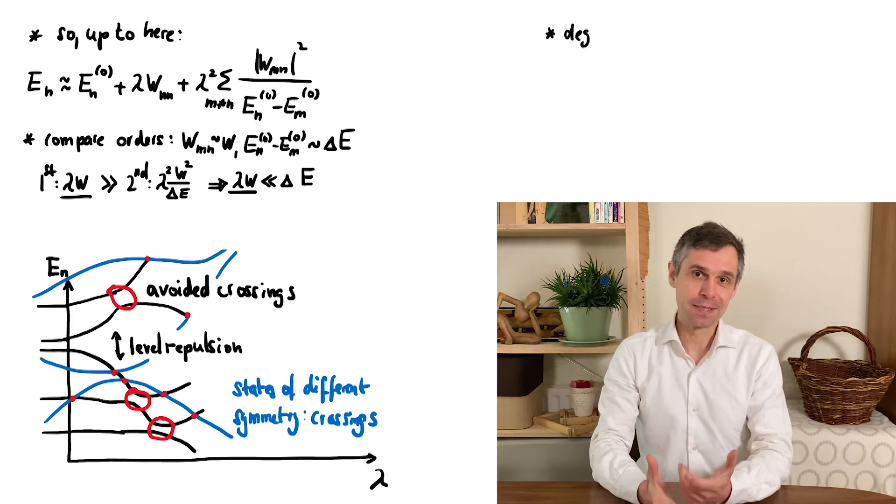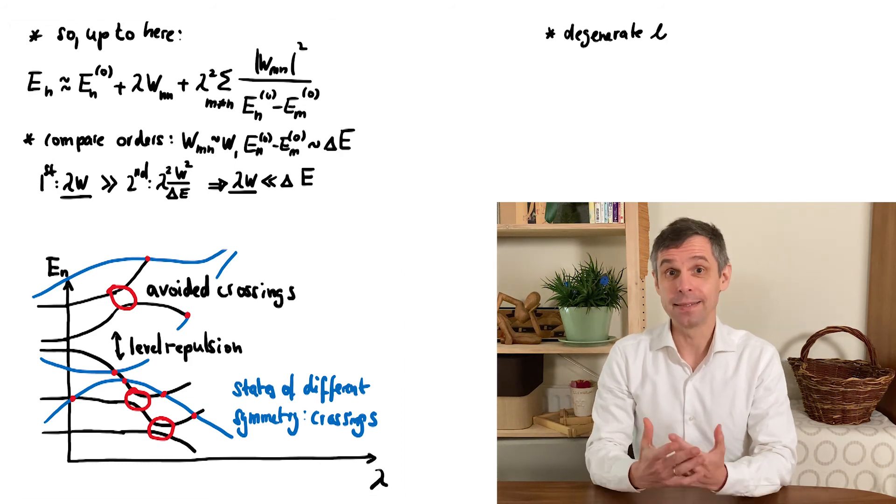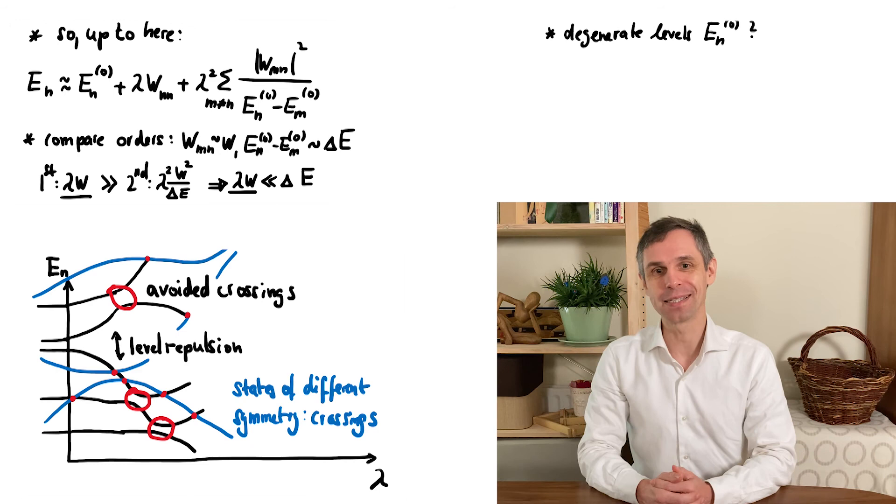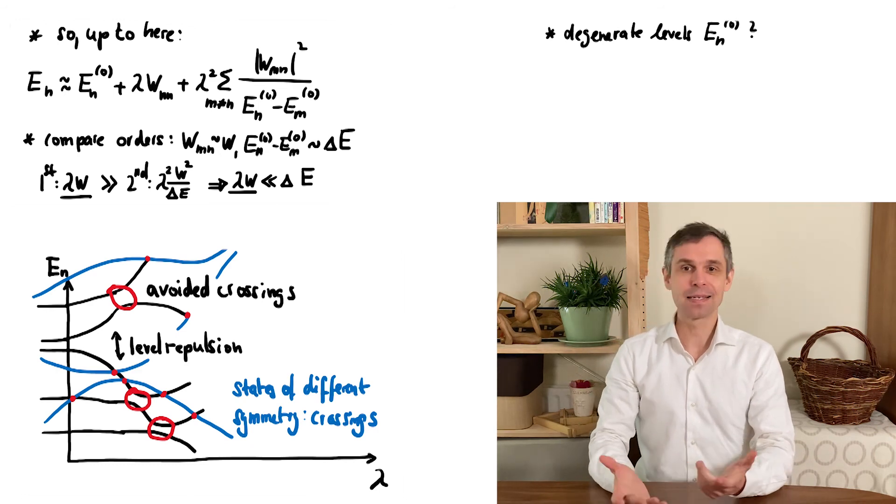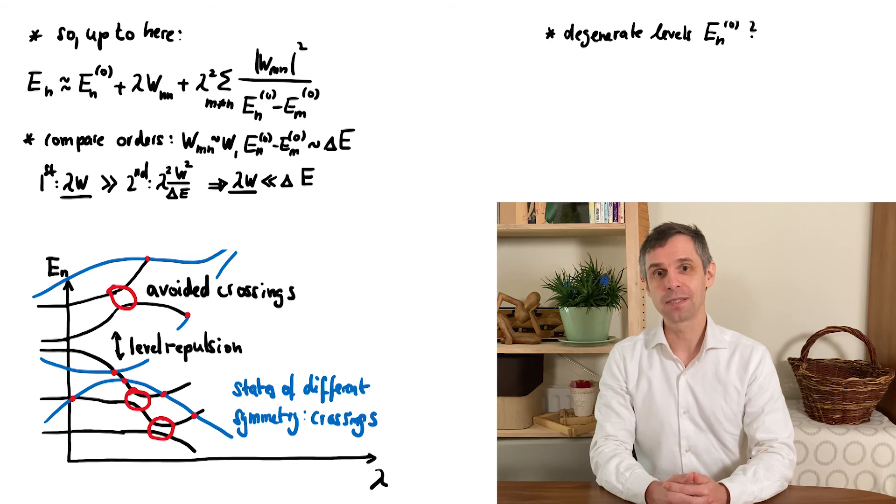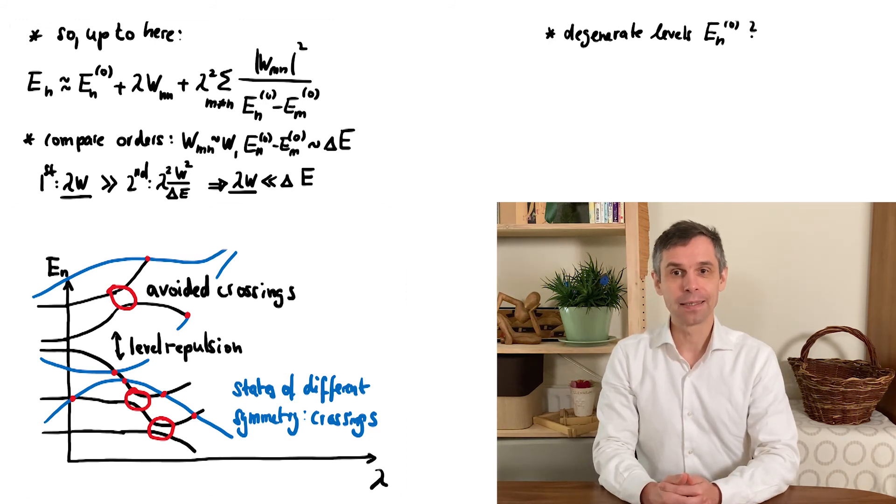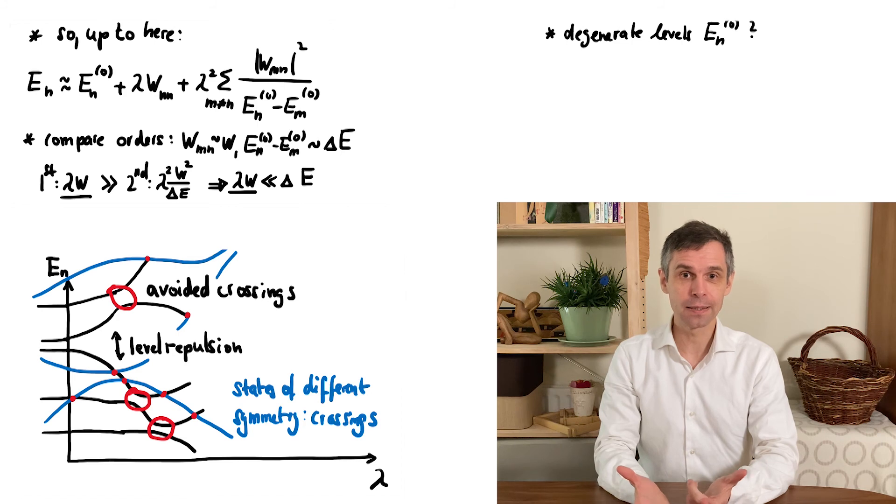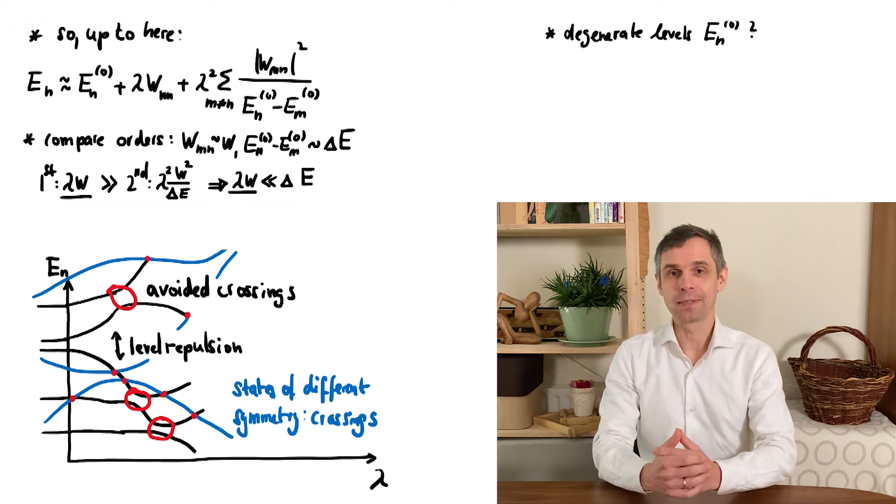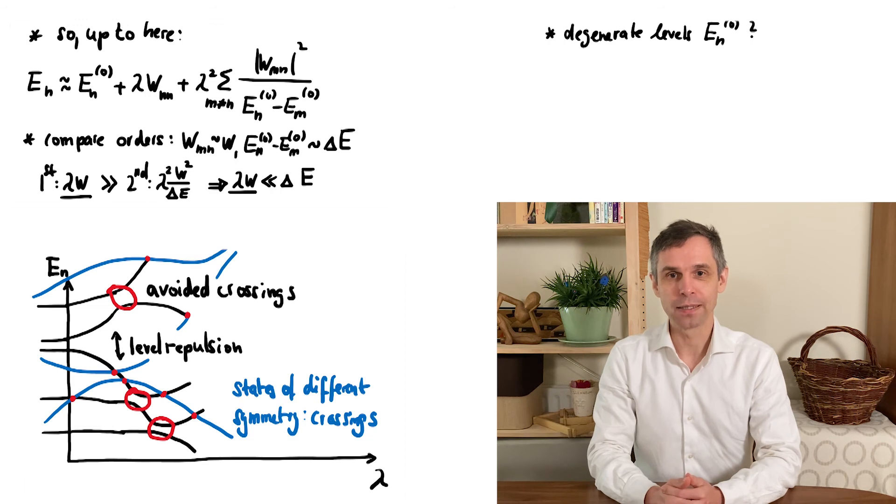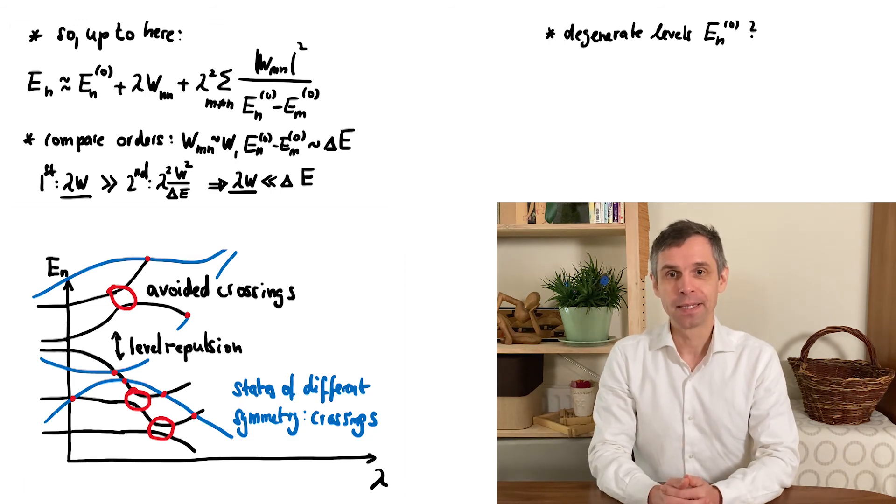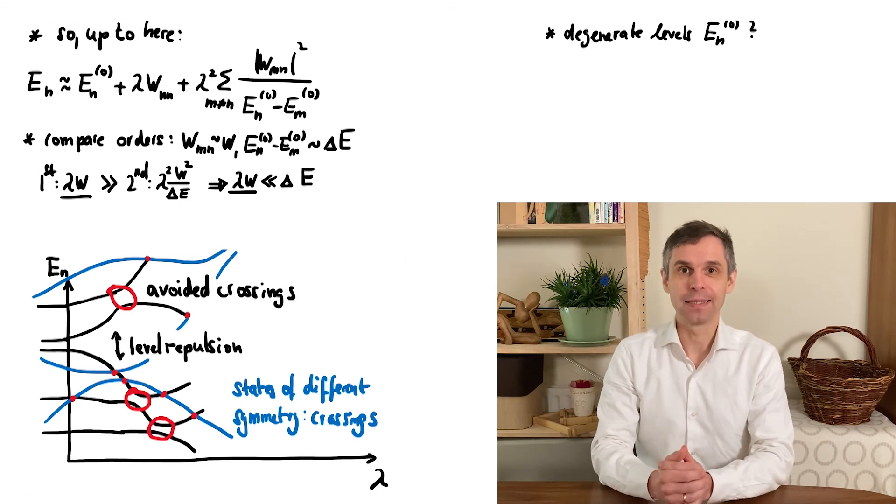Thirdly, we see that we seem to have a problem when energies are degenerate, so coincide for two different states of the original quantum system. This is again often the consequence of a symmetry, such as rotational symmetry in a three-dimensional system, where we can now have different states that are related by a rotation. And that's actually a very important case because you would often find out about these degeneracies when you break them by a perturbation. The matrix elements then become finite.